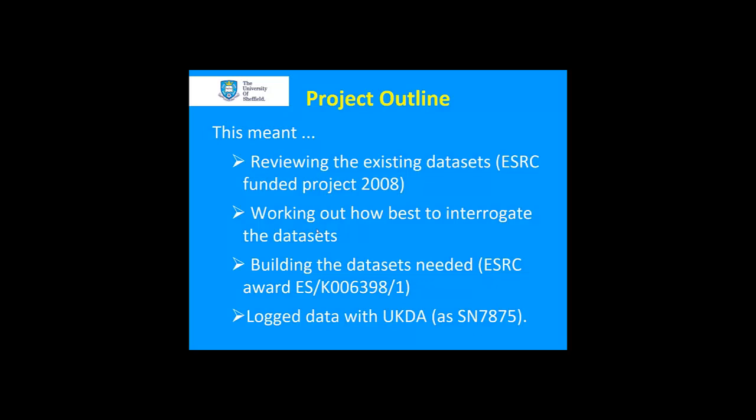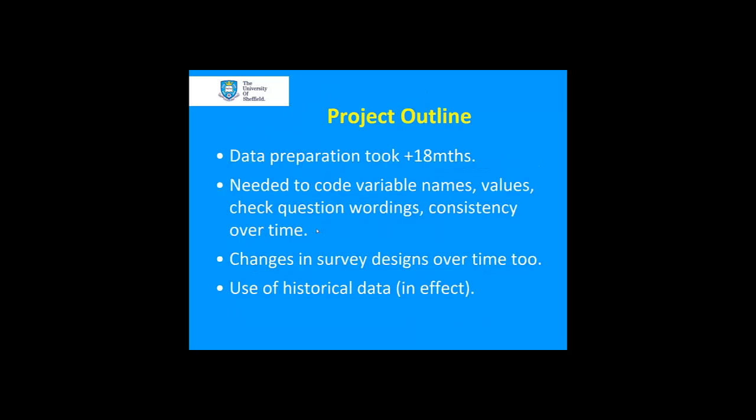That collated data was then lodged at the UK Data Archive as study number SN7875. The data preparation took around 18 months, partly because we needed to check that variable names were consistent — and of course they weren't — that values were consistent, and that question wording was consistent over time. There were also changes in the survey designs over time, particularly for the British Crime Survey, and that's one of the things you need to bear in mind when analyzing the collated data.